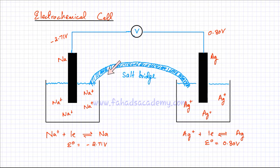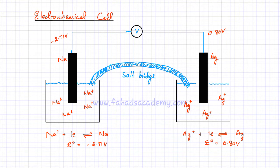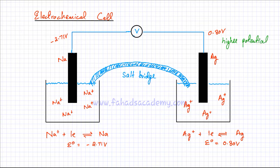If electrons are moving from one side to the other side, then the charges must flow back as well — that's going to complete the circuit. If you look at this arrangement, you're going to notice that this electrode is at a negative potential and this electrode is at a positive potential. So this is your higher potential — this side over here is the higher potential, whereas the other side, the minus 2.71 volts, the sodium-sodium ion electrode, is at a considerably lower potential. We know that electrons move from the lower potential to the higher potential, from the negative side to the positive side.